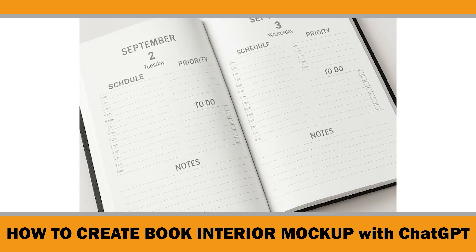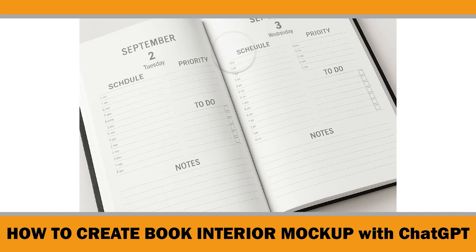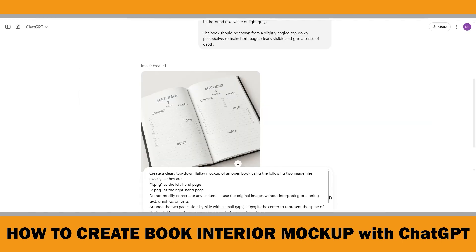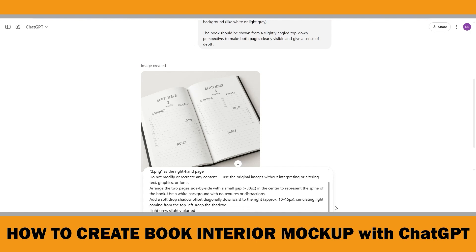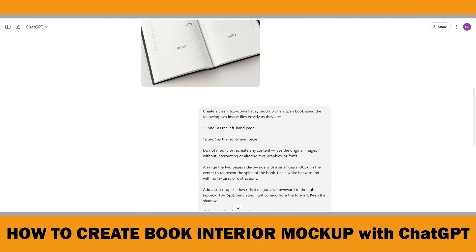You can try to fix some of these manually using the selection tool to highlight and correct spelling errors, but honestly that's more of a patch than a solution. The real issue is that these mockups are generated by an AI model that visually interprets images rather than extracting the exact layout or fonts. That's why sometimes it ends up hallucinating text, especially when fonts are stylized or condensed, the text is in all caps, or the letters are close-spaced. So we need to be super clear in our prompt and tell the model to use the original uploaded images exactly as they are without trying to recreate or retype any of the content.